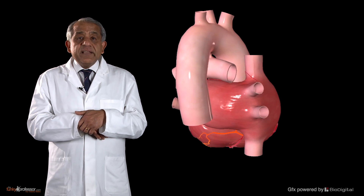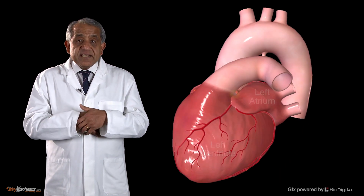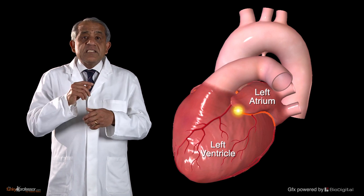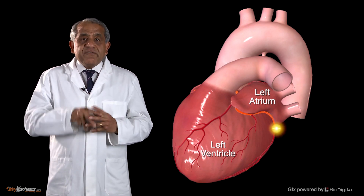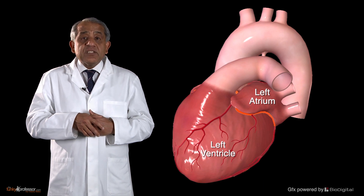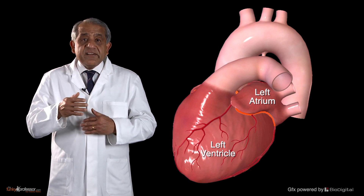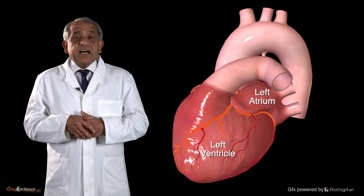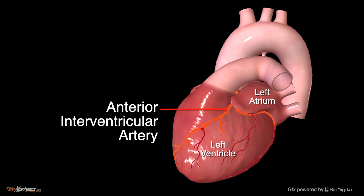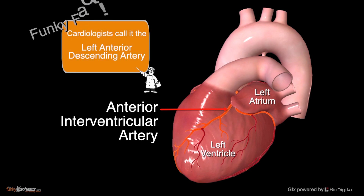The left coronary artery, which also arises from an aortic sinus — the left aortic sinus — runs from front to back in the atrioventricular sulcus between the left atrium and the left ventricle. Very soon after its origin it gives rise to a large vessel that runs down the anterior aspect of the heart in the interventricular groove. This artery is called the anterior interventricular artery — cardiologists call this the left anterior descending artery. Having given off this artery, the left coronary artery changes its name to the circumflex artery and continues to run backwards in the atrioventricular sulcus.